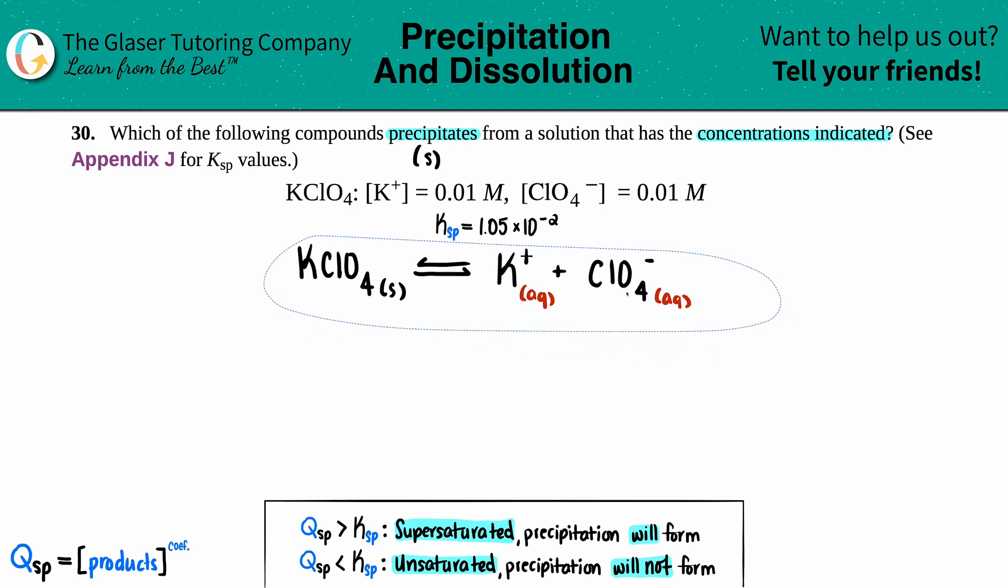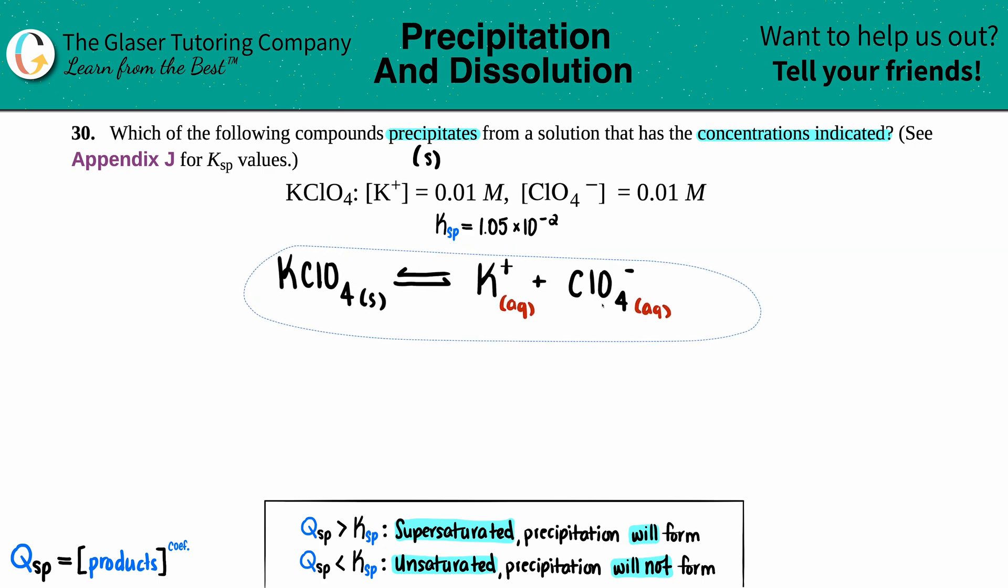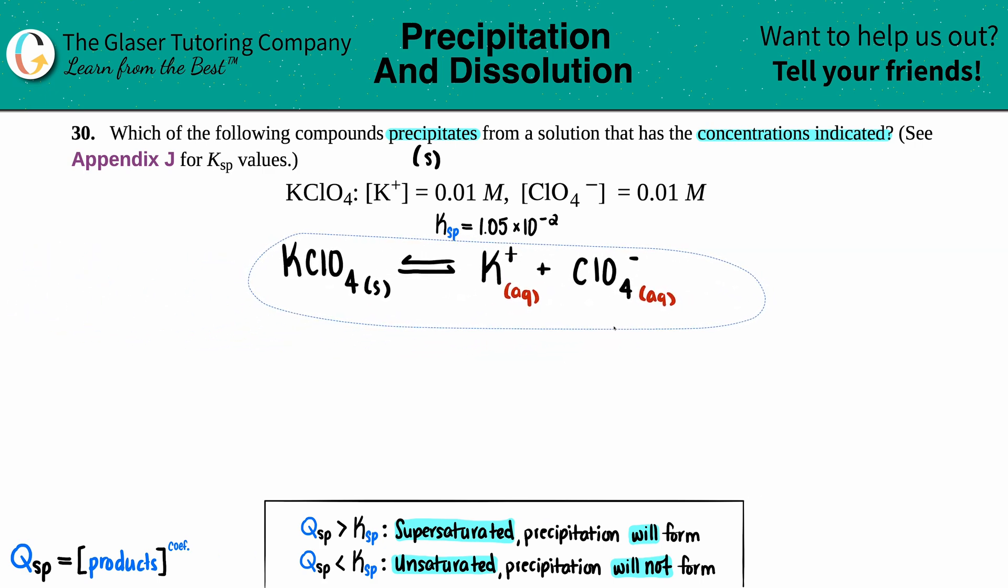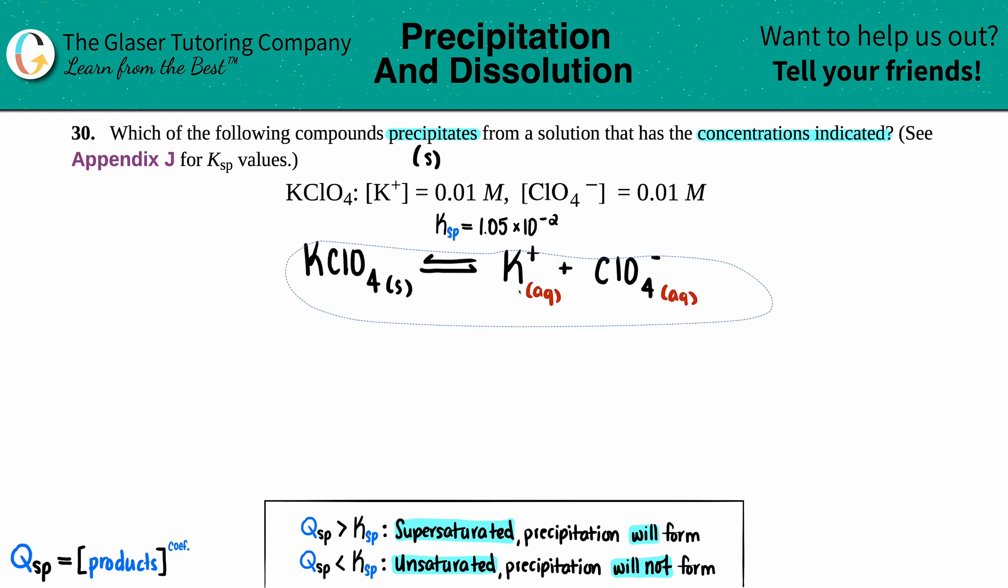I'm just going to pull this up. Actually, we'll see how it looks like if I just do it straight down the middle. So now I'm just going to put out what the ions they told us, right? So they told us that our K plus ion was 0.01 molarity. And they told us that the ClO4 minus is 0.01 molarity.